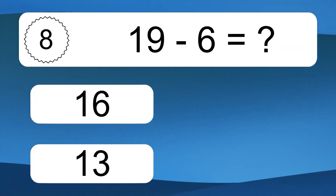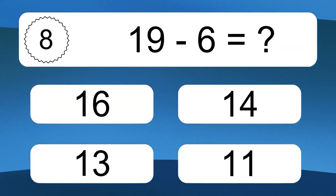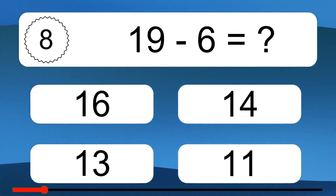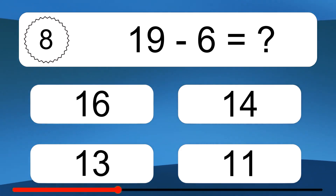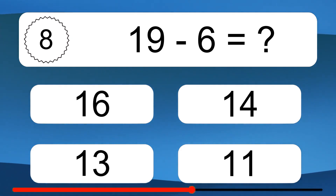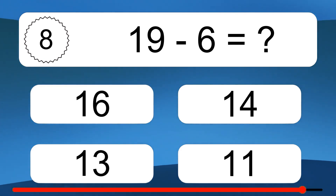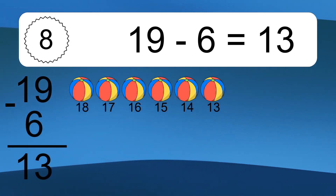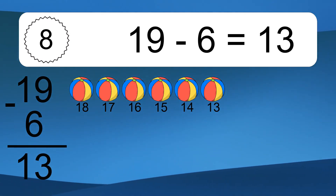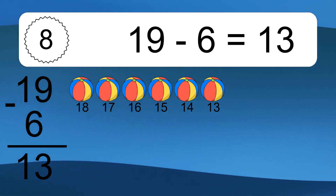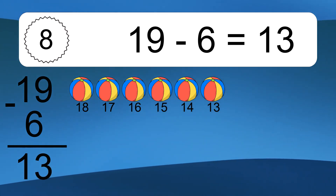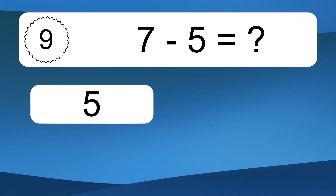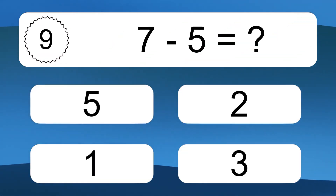19 minus 6 equals what? 19 minus 6 equals 13. Let's count it. 18, 17, 16, 15, 14, 13.